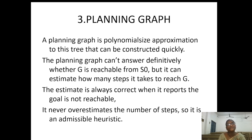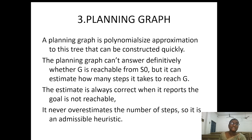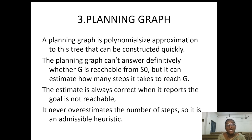In the planning graph, we have a graph that is a polynomial approximation to a tree. It is in the form of a tree which can be constructed quickly. The planning graph cannot answer definitively whether the goal state is reachable from the initial state, but it will estimate how many steps it should take to reach the goal state. The estimate is always correct when it reports the goal is not reachable, and it will never overestimate the number of steps.